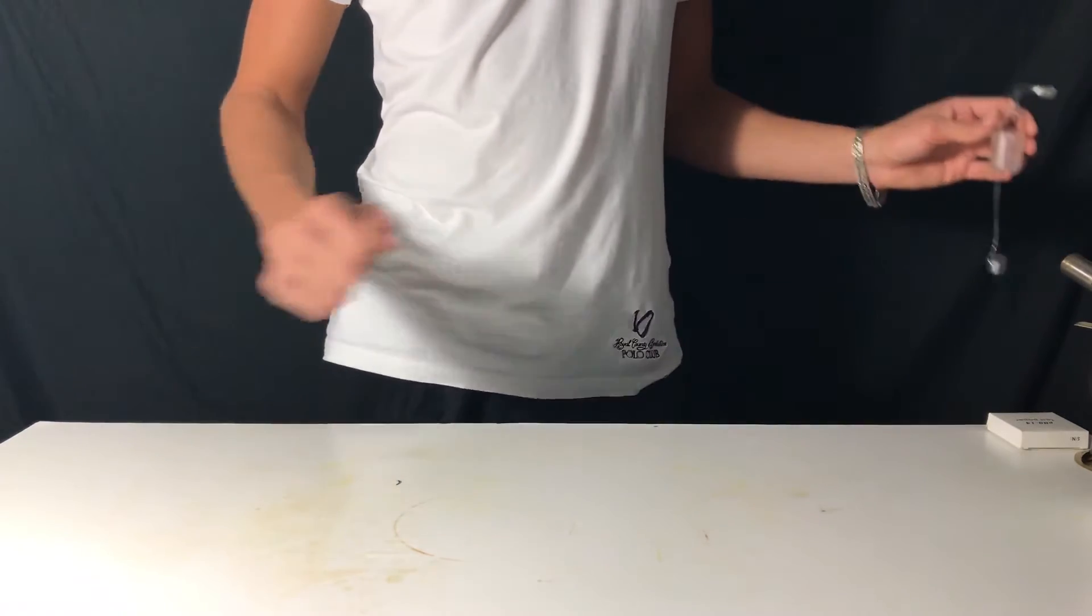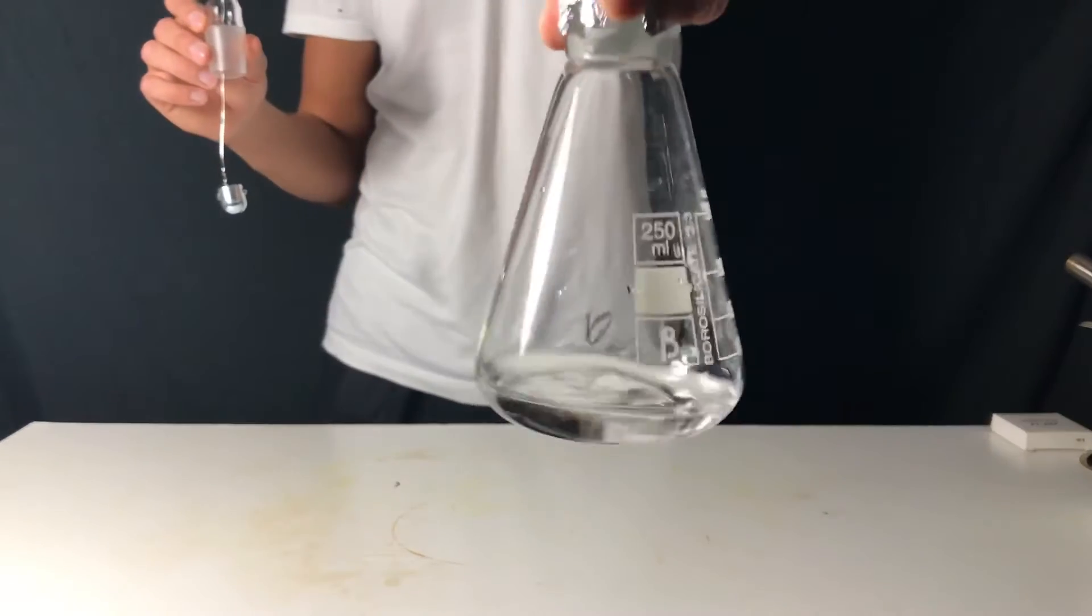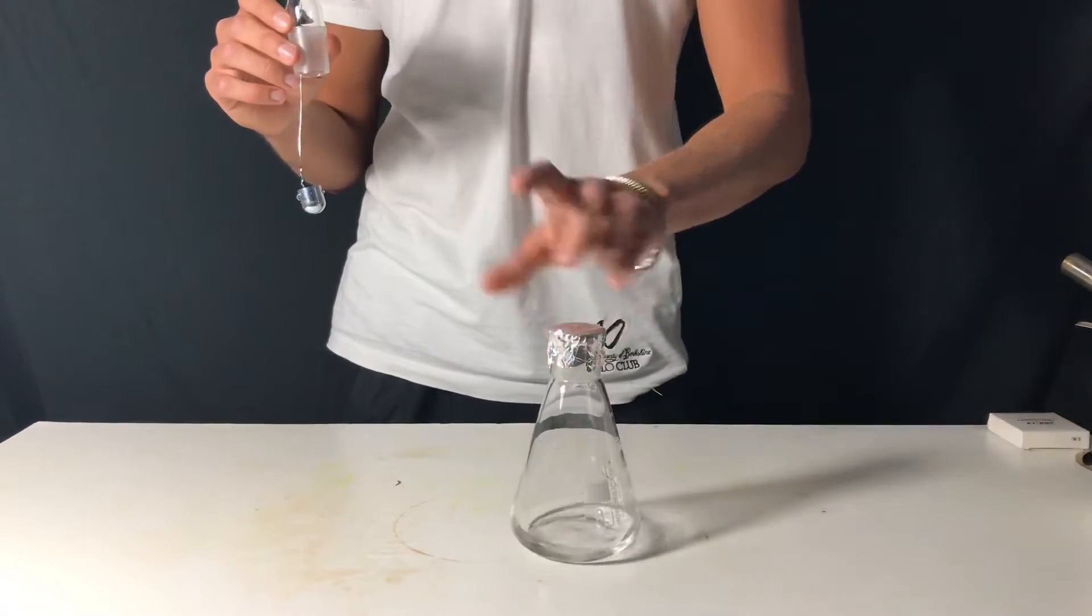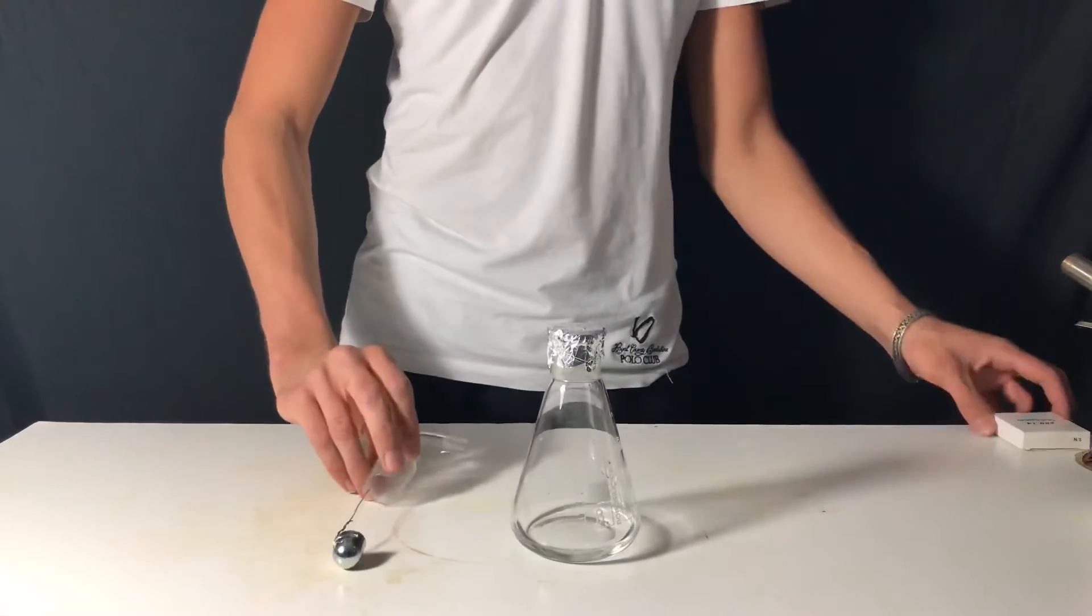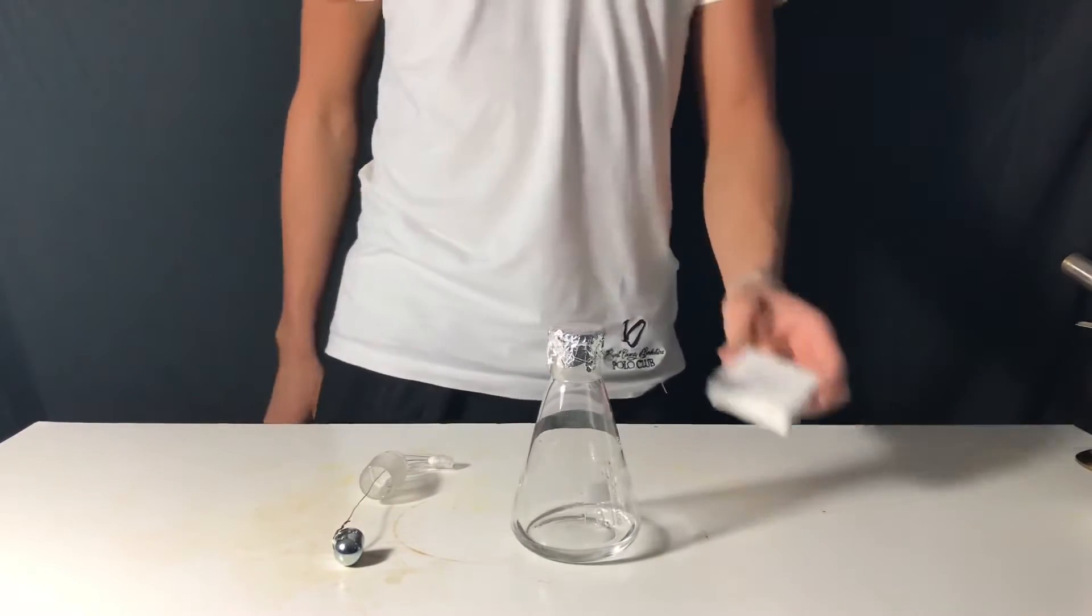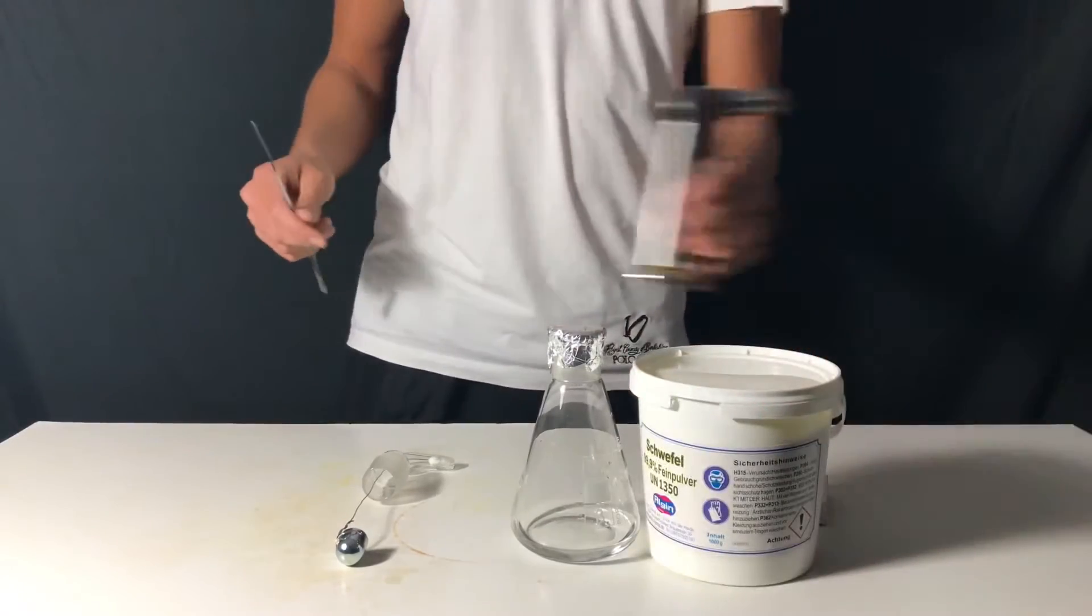For this experiment you are going to need some sort of burning dish connected to a glass adapter, a flask filled with water and oxygen and the adapter should go down all the way to the bottom, pH paper, a spatula, and sulfur.